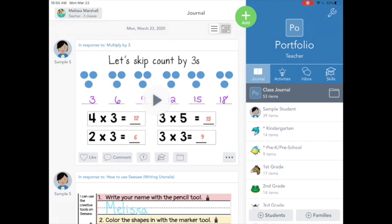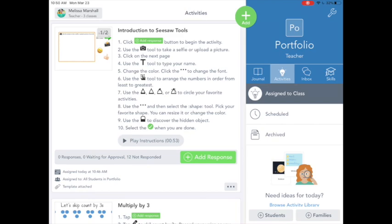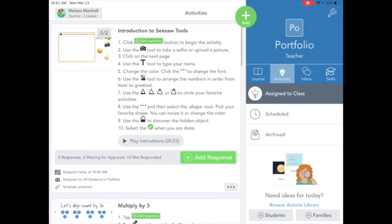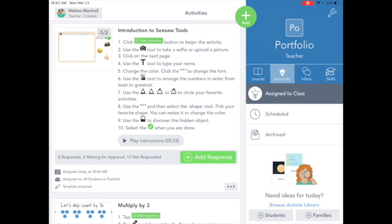When you first log into Seesaw, you will see your class journal. Click on the activities tab to start a new activity. When you click on the activities tool, you will see any activities that are available for you. Find the activity that you're looking for and read over the instructions. You can also click on play instructions if it is available.